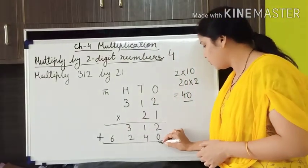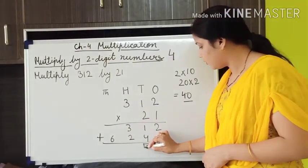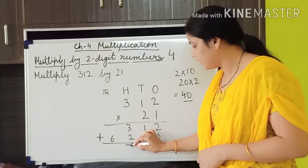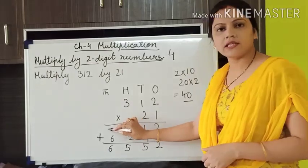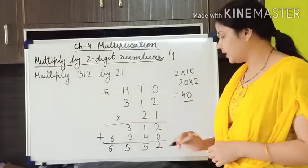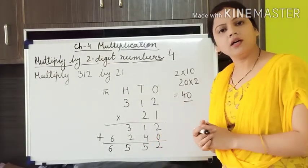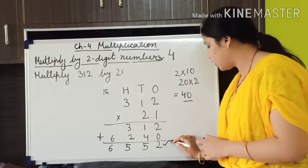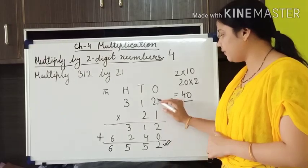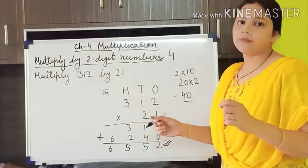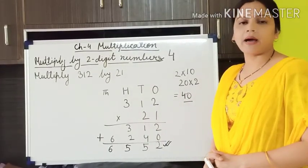So: 2 plus 0 is 2, 4 plus 1 is 5, 2 plus 3 is 5, and 6 we write as it is because nothing else is written there. We have added the sets of numbers according to their places, and the number we got after this addition is the product of the two factors. Hope this is clear to you. Just pause this video and write these things in your maths notebook.